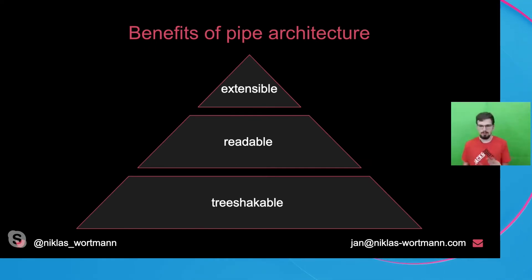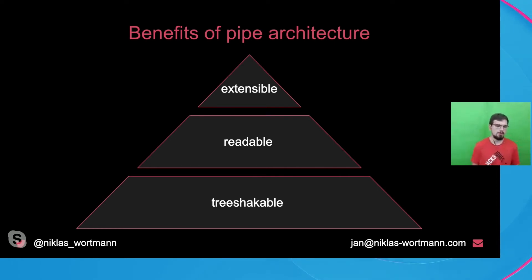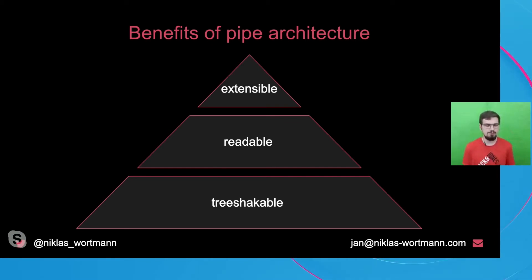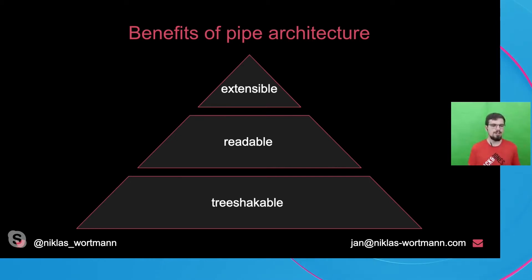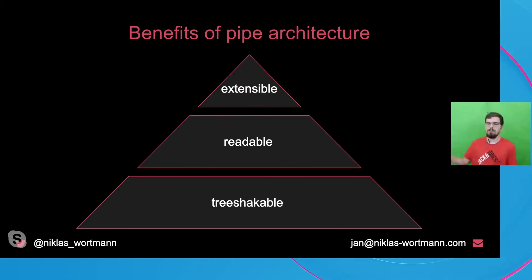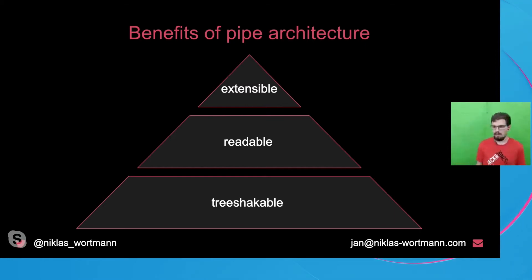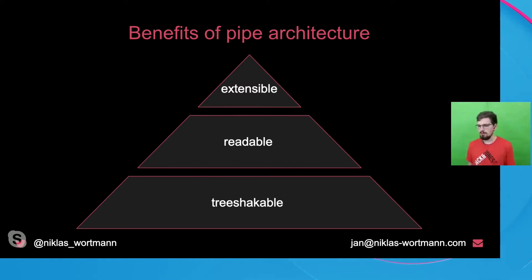The pipe architecture grants us two important benefits. The first is tree-shakeability — this was a key argument when the pipe architecture was introduced, and it's still the biggest argument today. The other benefit is readability — using the pipe method is far more readable than having inverted calls. And there's also extensibility, which I consider important when talking about how we can implement operators on our own.